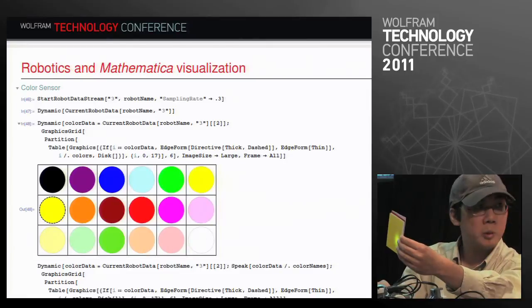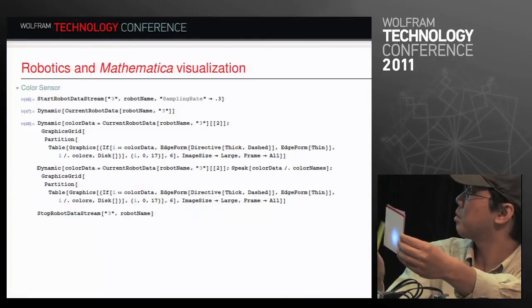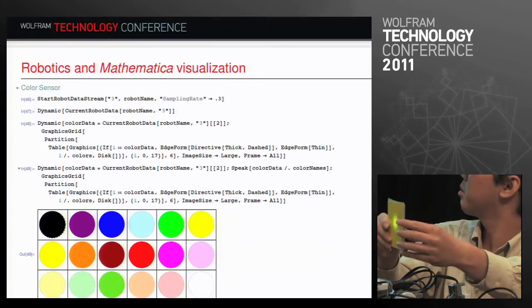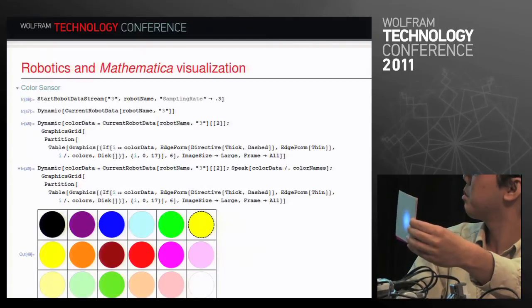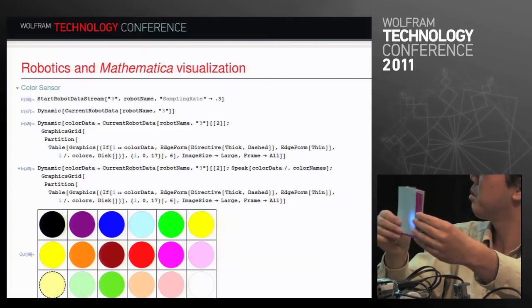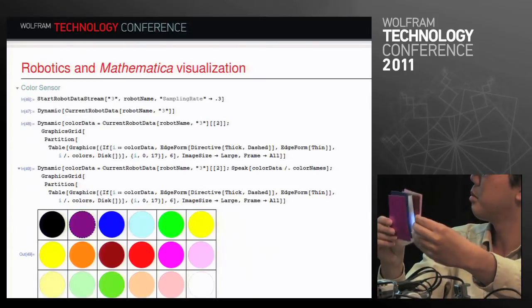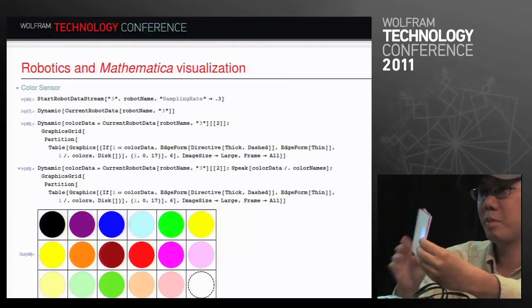Let's do a little bit more. We're going to use Mathematica's speak function. Yellow. Black. Yellow. Yellow. Purple. It's British. White. Black.